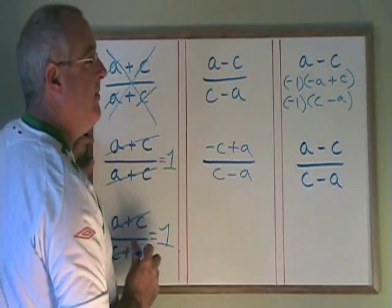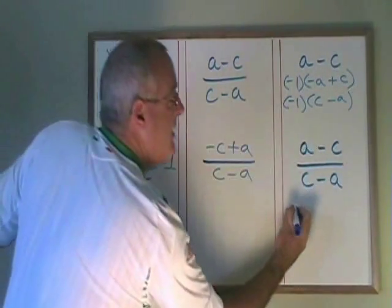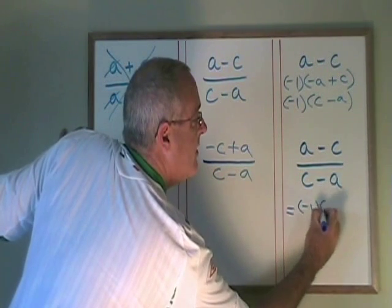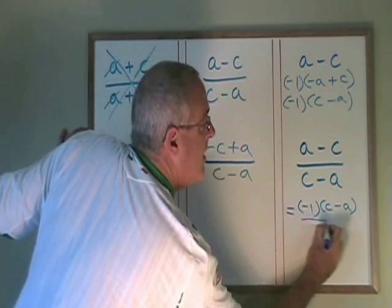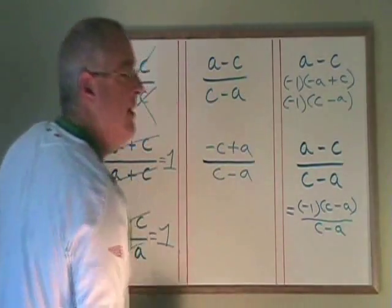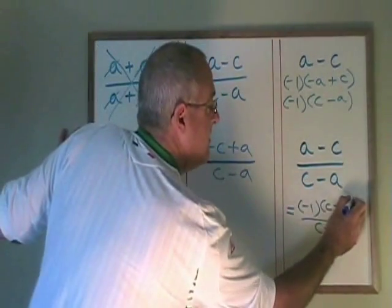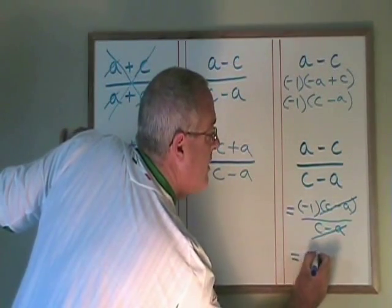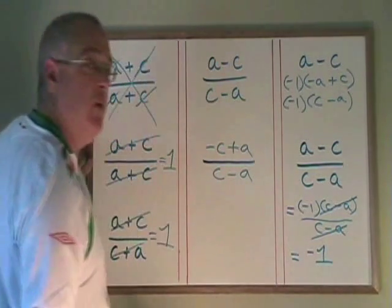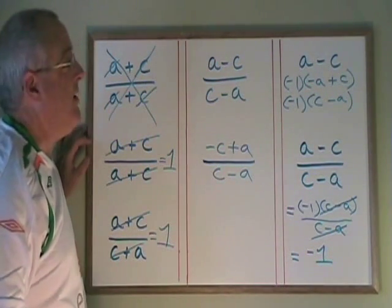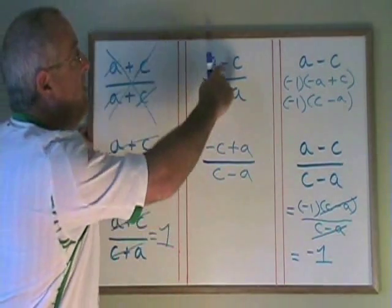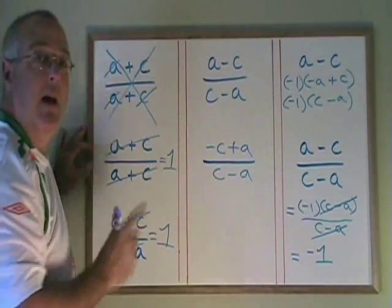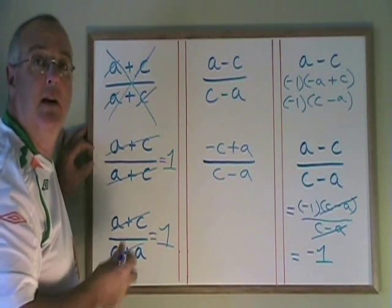Let's try simplifying this expression now. a minus c, using the common factor method, becomes negative 1 times c minus a. The bottom is also c minus a, and the two binomials c minus a cancel. We still have our negative 1, so our final answer for this simplification is minus 1. This is the minus 1 trick. Whenever you want to turn a binomial with a subtraction backwards, all you have to do is factor out a negative 1 and then you're able to write a minus c as c minus a.